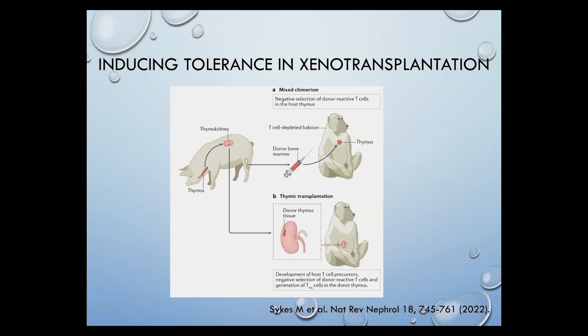Tolerance is a big deal in transplantation because it reduces the need for immunosuppression, which is definitely a burden for transplant patients after surgery. There are two ways tolerance could be created. First, bone marrow from the donor pig is injected into a T-cell depleted baboon; donor bone marrow-derived dendritic cells migrate to the host thymus, negatively selecting donor-reactive host T-cells, resulting in tolerance. In the second scenario, the donor pig thymus is transplanted, sometimes under the kidney capsule, into a T-cell depleted thymectomized baboon, where T-cells develop from host precursors and tolerance is induced through generation of regulatory T-cells.